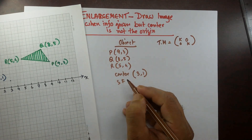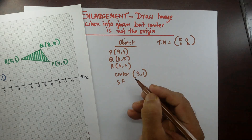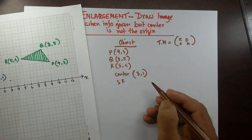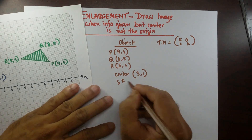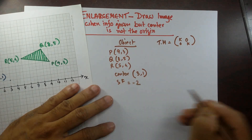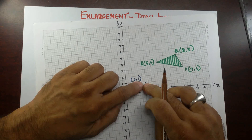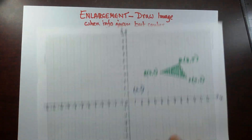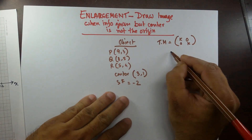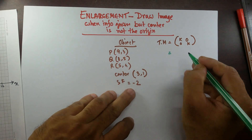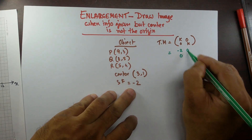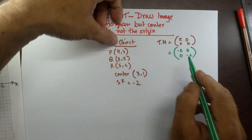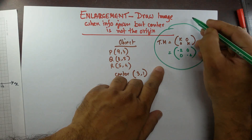The scale factor, let's make it interesting — let's put it as minus two. So the center is over here and the object is over here, meaning the image is going to be somewhere over here. Using the transformation matrix with k equals minus two, the matrix becomes [-2, 0; 0, -2].